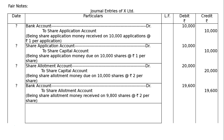Bank Account debited to Share Allotment Account. Here, A who held 200 shares failed to pay the money on allotment and calls. Being share allotment money received on 9,800 shares at the rate of Rs 2 per share — 200 shares failed by A. That is, 9,800 × 2 = Rs 19,600.